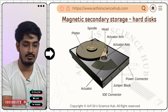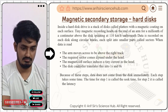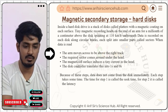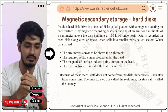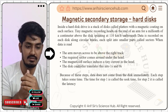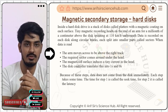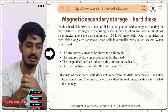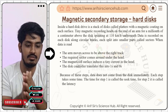When reading or writing from the hard disk drive, the arm moves across to be above the right track, and the required sector comes around under the head. The magnetized surface induces a tiny current in the head, and the disk controller translates this current as a zero or one — current present is one, no current is zero. All data is stored in binary form.